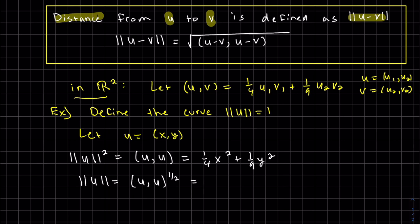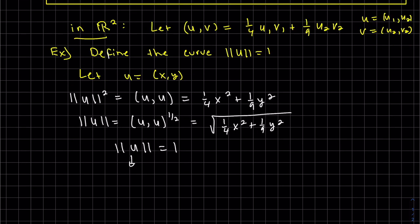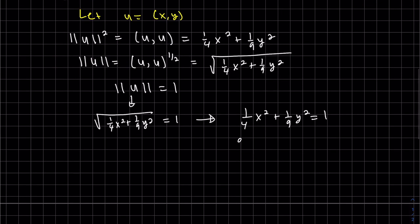Take the square root of both. This is my curve. This is the curve. We square both sides. It's an ellipse.